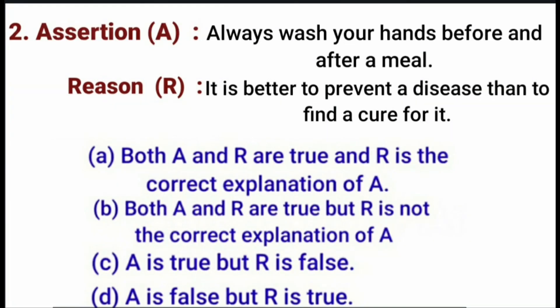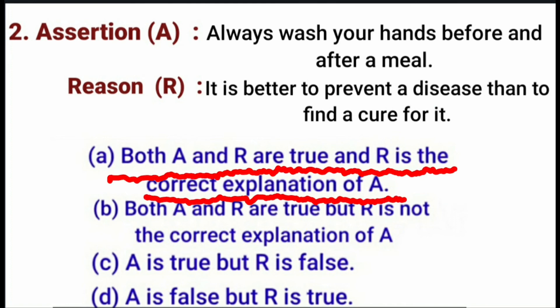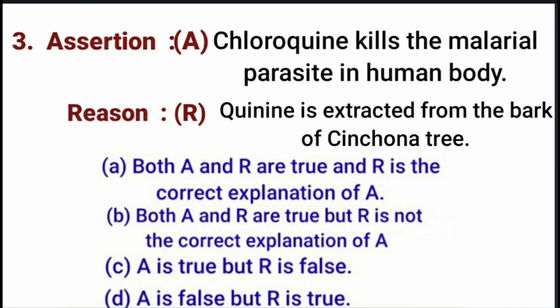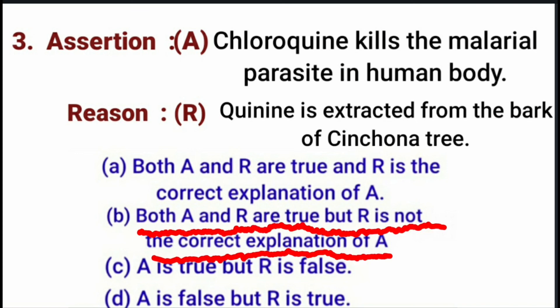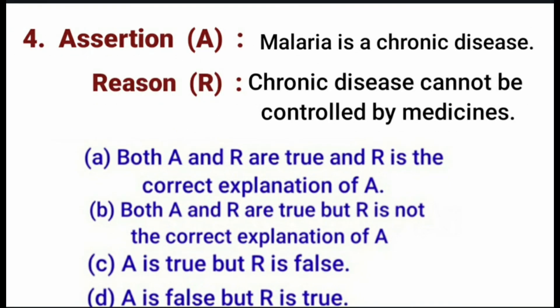Question 2 — Assertion: Always wash your hands before and after a meal. Reason: It is better to prevent a disease than to find a cure for it. Answer: Option A — Both assertion and reason are true, and reason is the correct explanation of assertion. Question 3 — Assertion: Chloroquine kills the malarial parasite in the human body. Reason: Quinine is extracted from the bark of the Cinchona tree. Answer: Option B — Both assertion and reason are true, but reason is not the correct explanation of assertion.